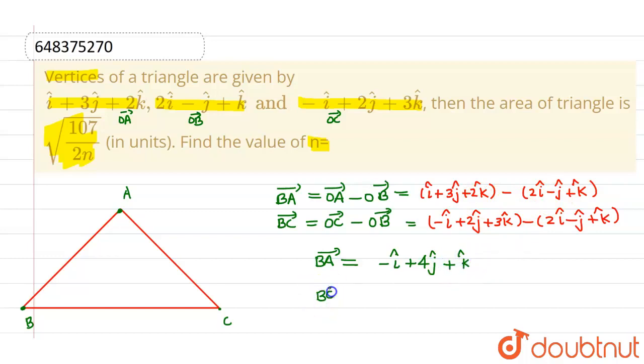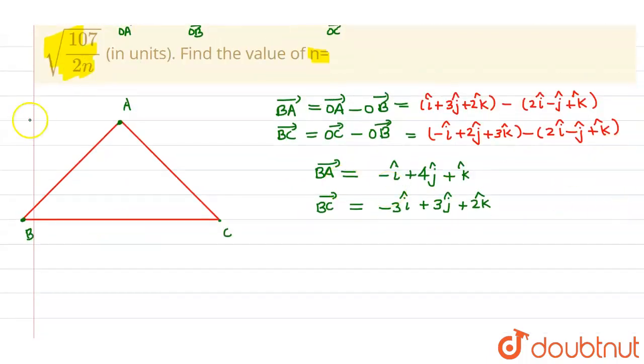And this side BC vector will be given by minus i minus 2i, which is minus 3i, 2j minus of minus j, which can be written as 3j, and at last 3k minus k can be written as 2k. Now if these two are adjacent sides, then the area of triangle will be given by half magnitude of BA vector cross BC vector.